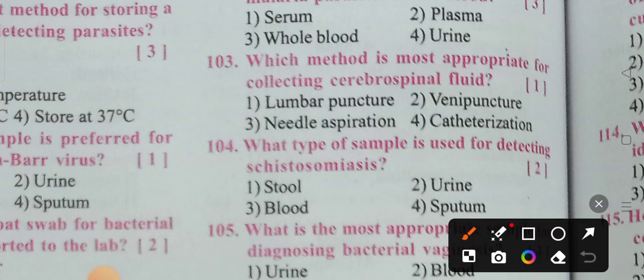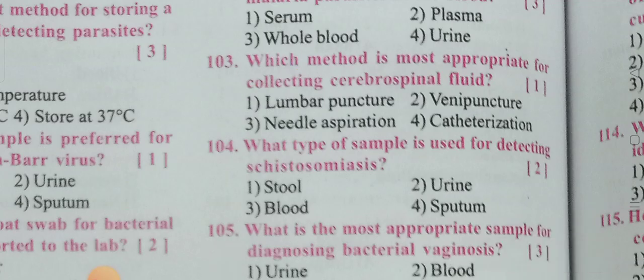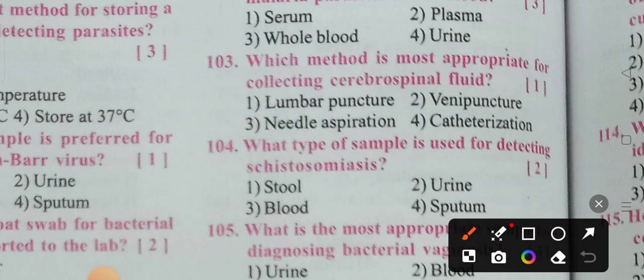Next: What type of sample is used for detecting schistosomiasis? Options: stool, urine, blood, or sputum. Option two — urine — is the correct answer.